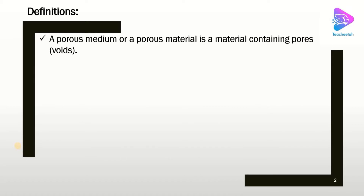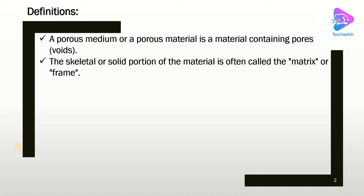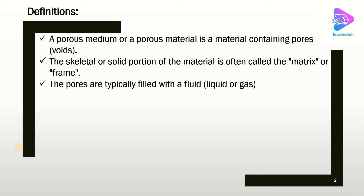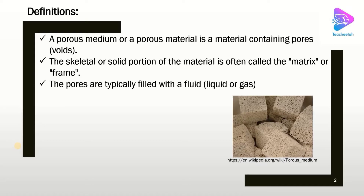What is a porous medium? A porous medium or porous material is a material containing pores or voids through the structure. The skeletal or solid portion of the material is called the matrix or frame. The pores are typically filled with a fluid such as liquid or gas. Here is one example of a porous medium.